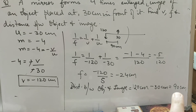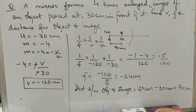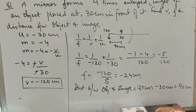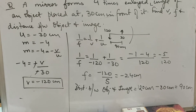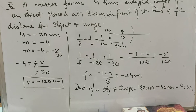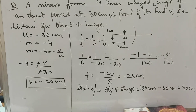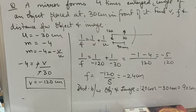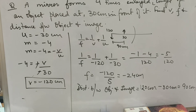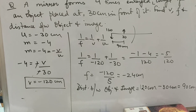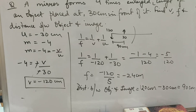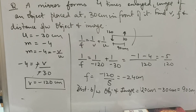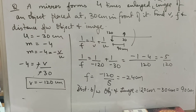Distance between object and image: object at 30, image at 120, so gap = 120 minus 30 = 90 cm. The ray diagram situation: focal length is 24 cm, object placed at 30 cm — so object is between C and F. Image forms beyond C, and it is real, inverted, and magnified.